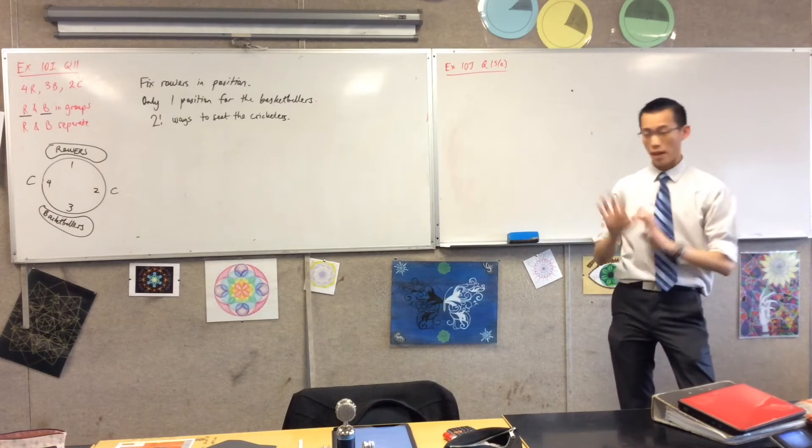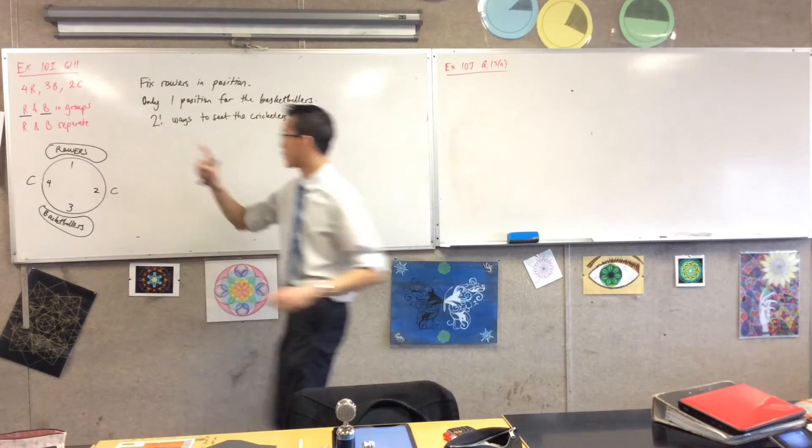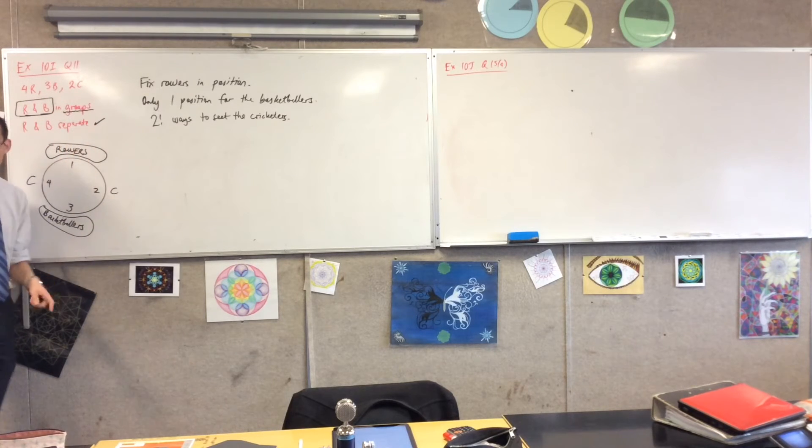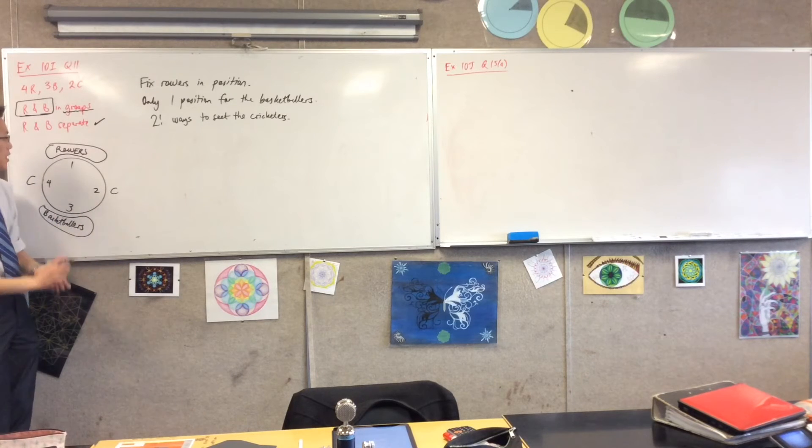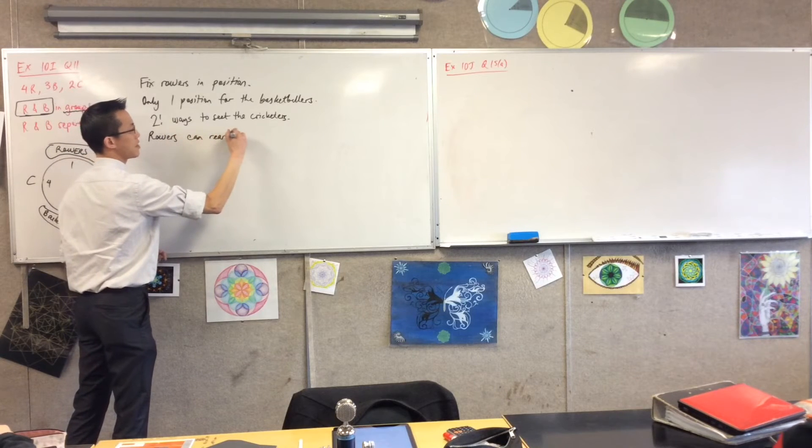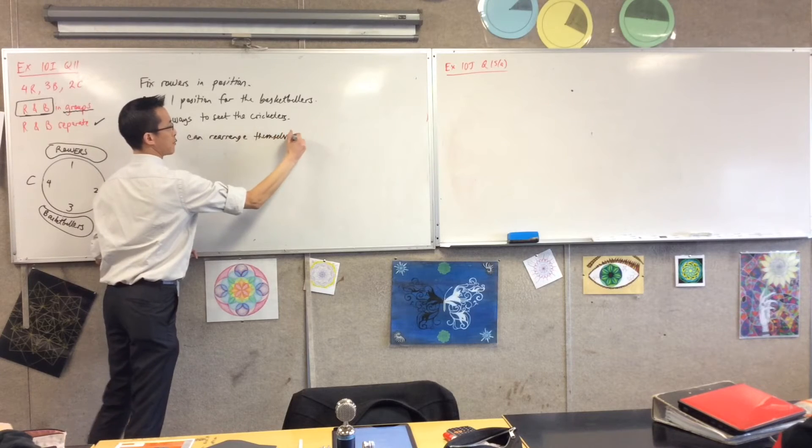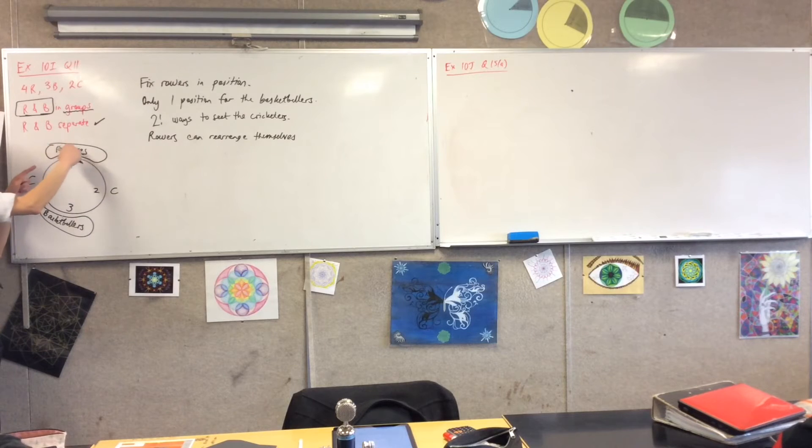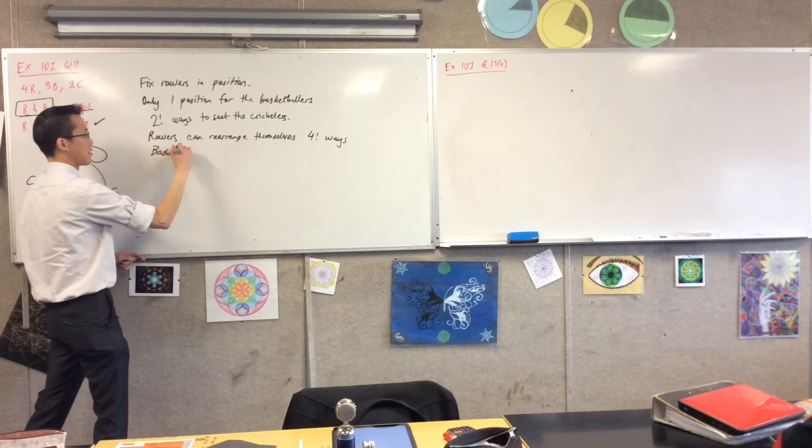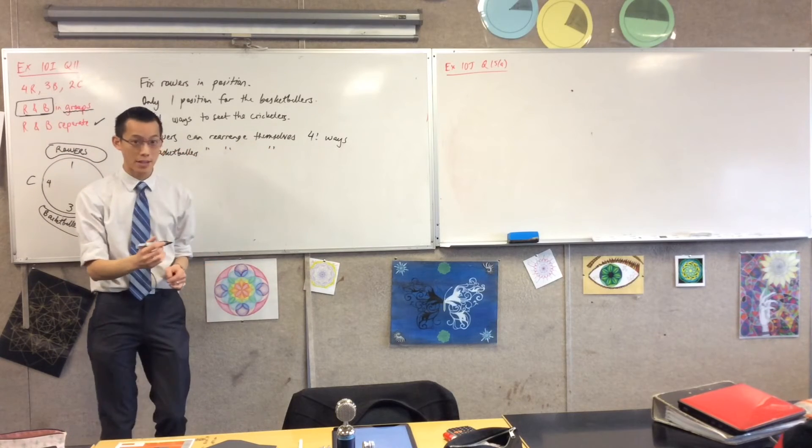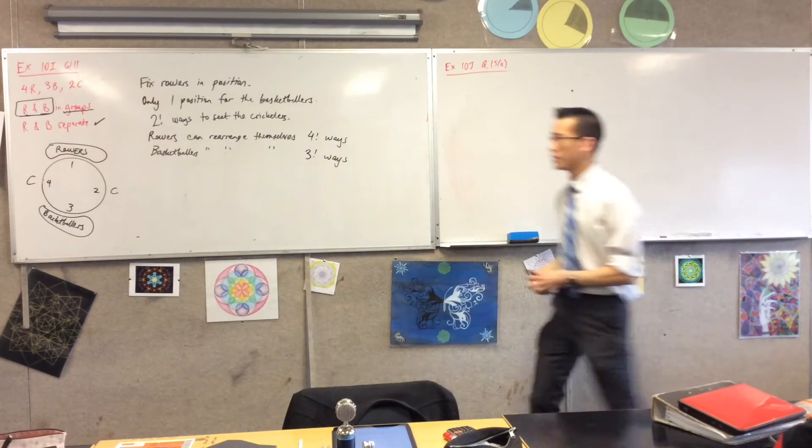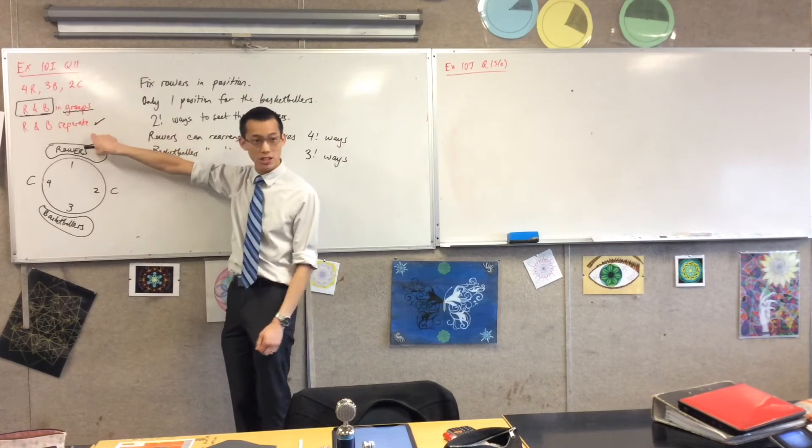So I have all of the objects around the table. What's left to consider? I've placed the actual rowers and basketballers, but I haven't dealt with the actual groups themselves, because they can shuffle around within the groups, and that will be different arrangements. So how many rowers are there again? Four rowers. So the rowers can rearrange themselves, so they're their own little arrangement. They're placed there, so that's going to be one, two, three, four spots. So how many ways? Four factorial ways. For the basketballers, how many basketballers? Three, so three factorial ways. Have I counted for everything in the question? All the people are in a spot. The groups have been sorted. The conditions have been met. That looks good.